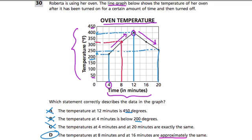Well, if I go up on 16, look what happens. The same thing happens. So we don't know exactly what number that is, but it's probably about 325. So at 8 and 16, I would say yes, the temperatures are approximately the same.